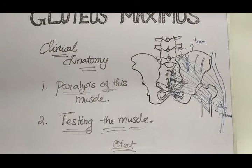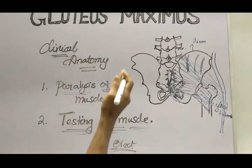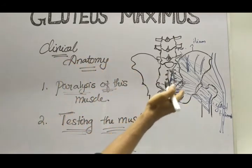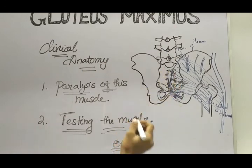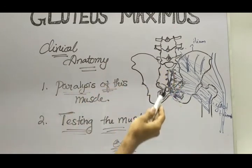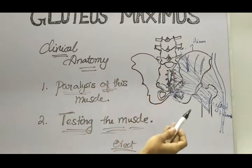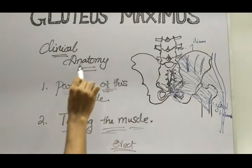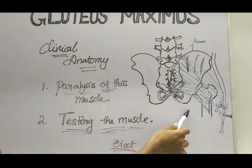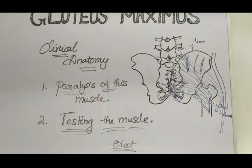So guys, today we saw about the gluteus maximus, which is the largest muscle of the posterior gluteal region. We covered its origin, insertion, nerve supply, the function of the muscle, and finally the clinical anatomy. Hope you guys understood — we'll meet in the next video. God bless you.